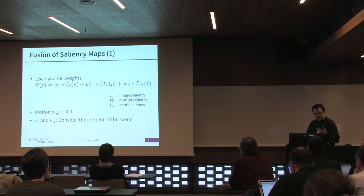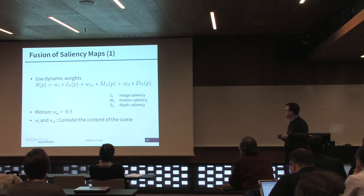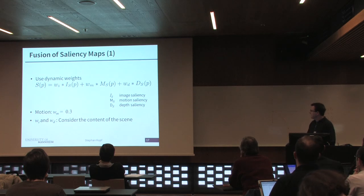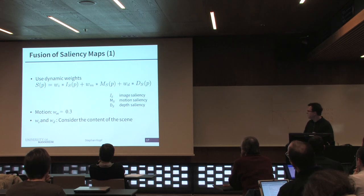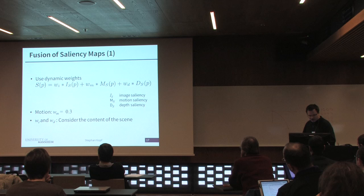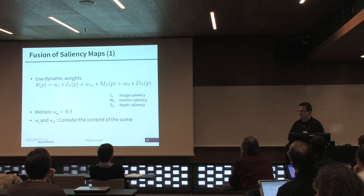The last step is to merge the three different saliency maps — image saliency, motion, and depth saliency — using weights that sum to one. We recognized that motion is always relevant, so we used a fixed weight for the motion factor. There was no example where we could say ignore motion entirely, so the combination worked best and we fixed this weight.